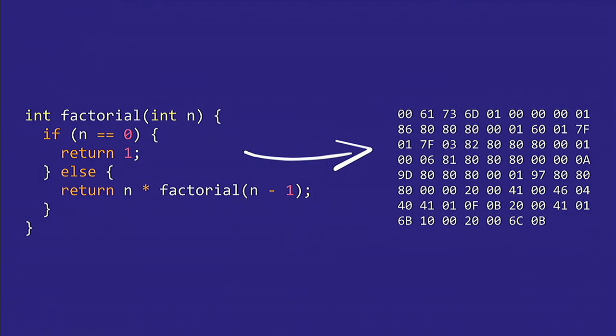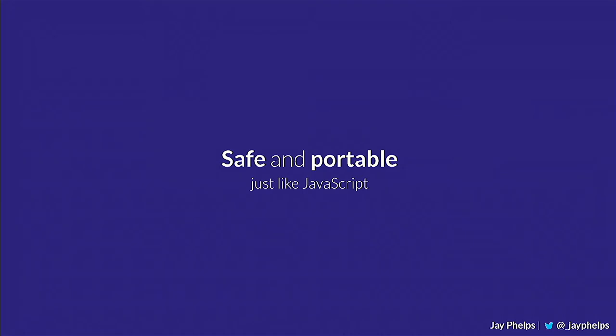With WebAssembly, you can compile this C code to binary data. WebAssembly is intended to be safe and portable, just like JavaScript is.